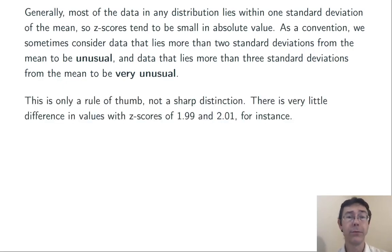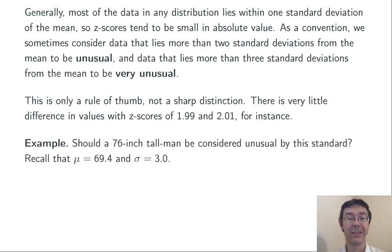But this is only a rule of thumb. It's not a sharp distinction. One way to convince yourself of that is just to notice that there's generally not much difference at all between data that has z-scores of 1.99 and 2.01. Those z-scores are very close, although one would be considered unusual and the other would not, according to this standard.